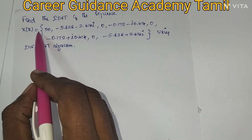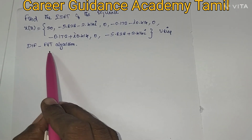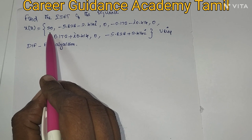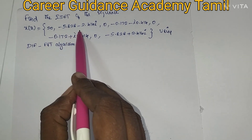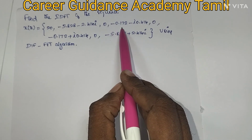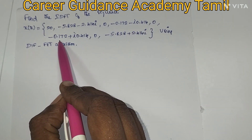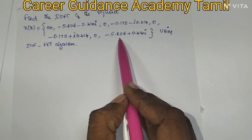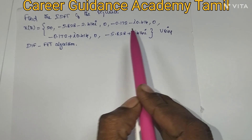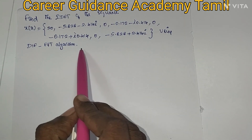Hello viewers, today we are going to see how to find the IDFT for the given sequence using DIF FFT algorithm. The given sequence x(k) is equal to: 20, minus 5.828 minus 2.414i, 0, minus 0.172 minus i·0.414, 0, minus 0.172 plus i·0.414, 0, minus 5.828 plus 2.414i. We have to find the IDFT using DIF FFT algorithm.